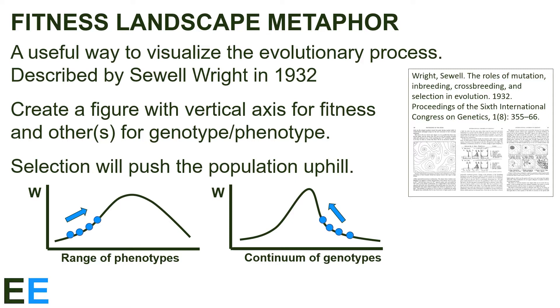The way a fitness landscape works is that we create a figure with a vertical axis for fitness and others for the range of genotypes or phenotypes of individuals. Individuals who vary in their genotypes or phenotypes will have different locations on the non-fitness axes, and that location will map up to a point on a fitness surface. Individuals with higher fitness will reproduce more than ones with lower fitness, so the next generation will have individuals more like the ones higher on the landscape. Selection will push the population uphill.